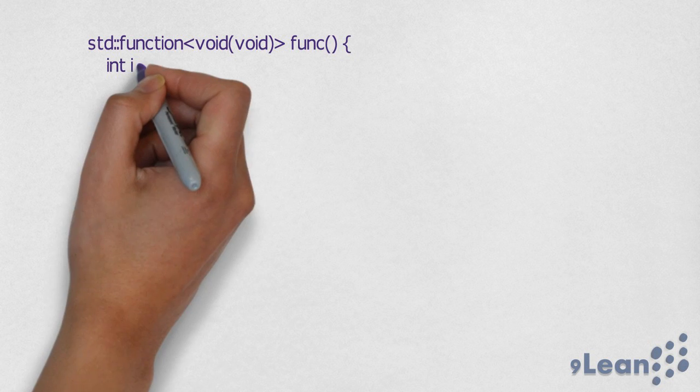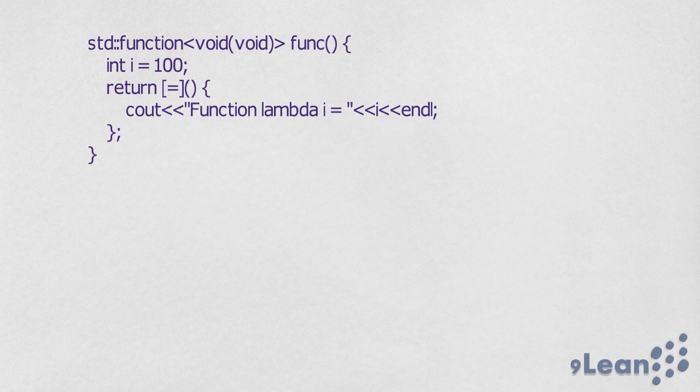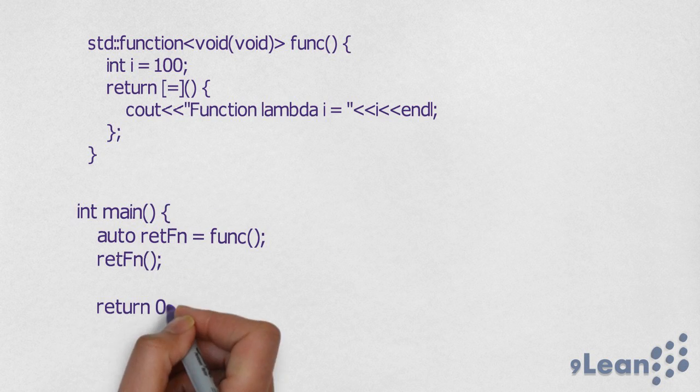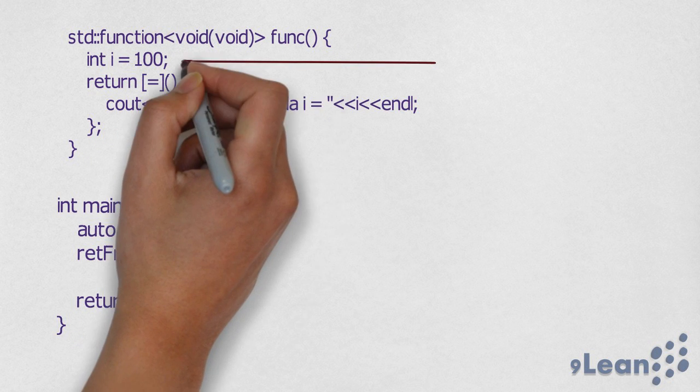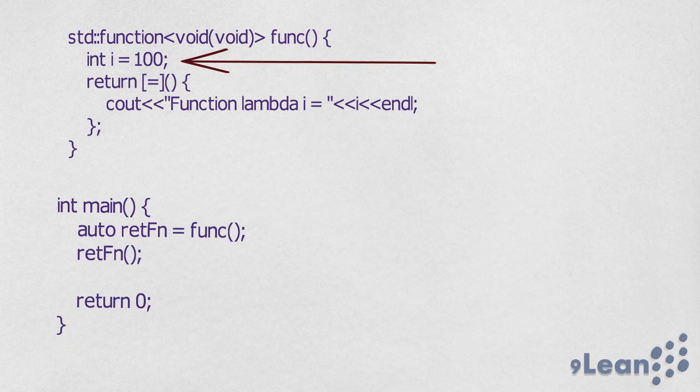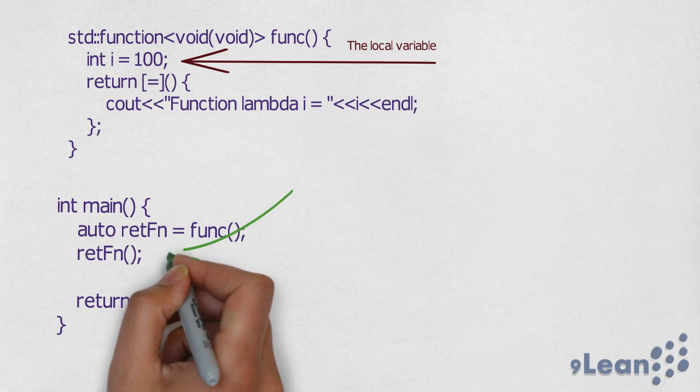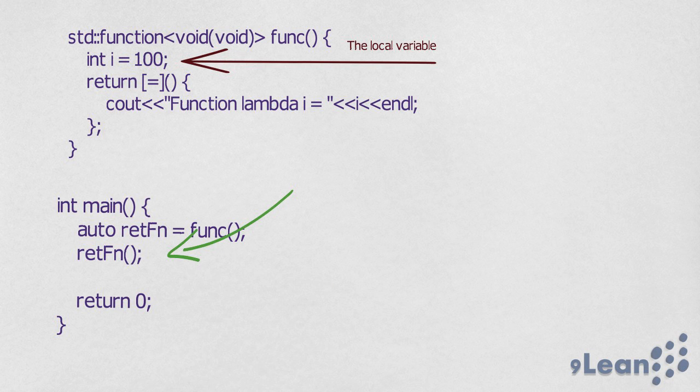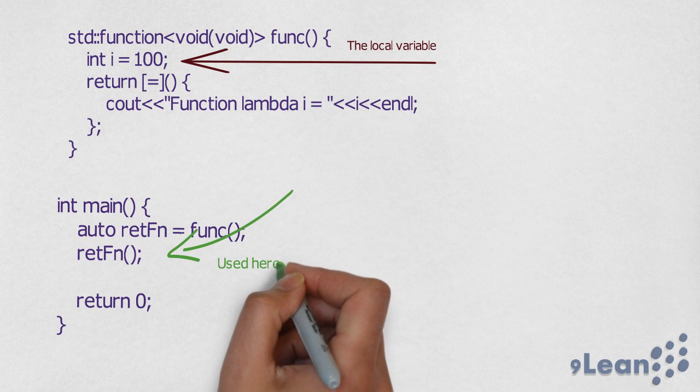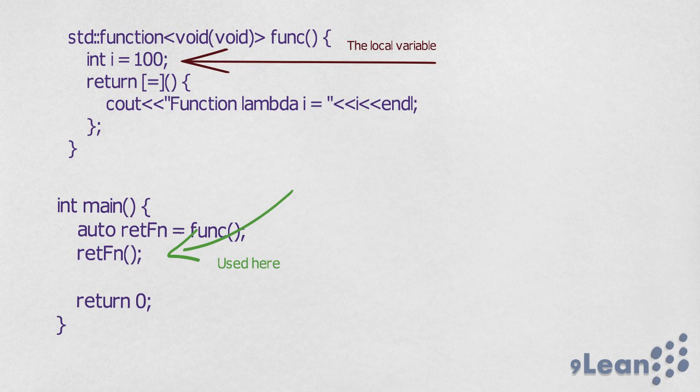Here is the code again, the function as well as the main function. Now you can see there is a local variable called int i equal to 100. This variable is local to the scope of the function func, but it is returning as part of lambda function and it's being successfully used in the main function.